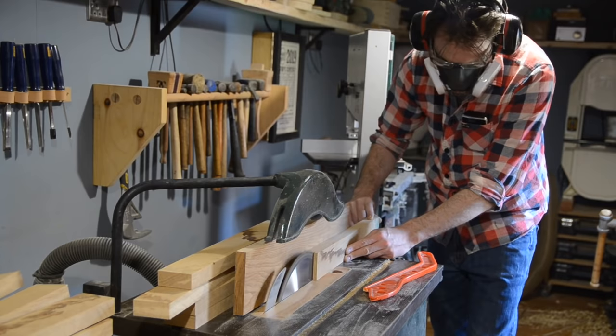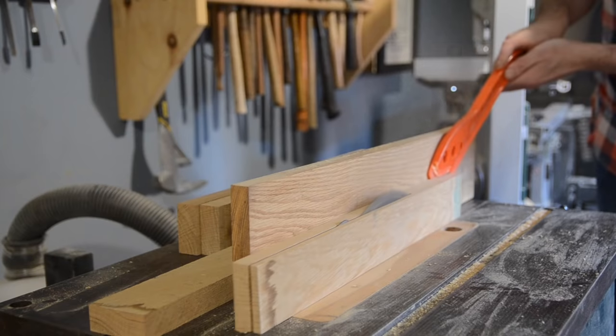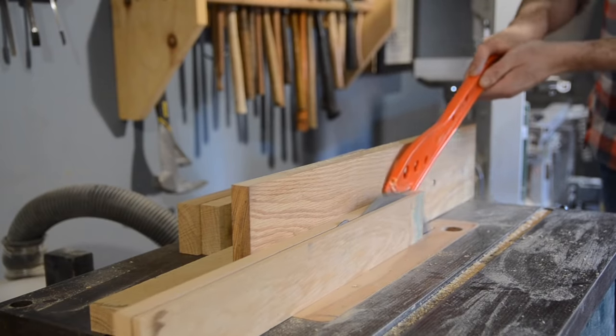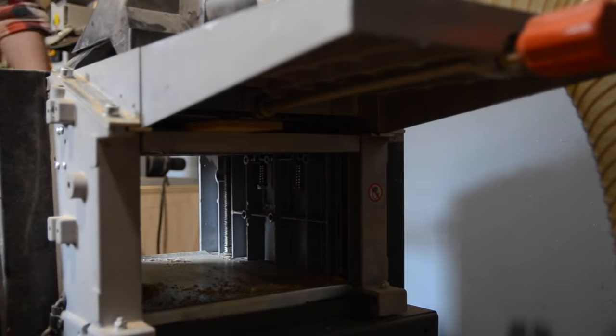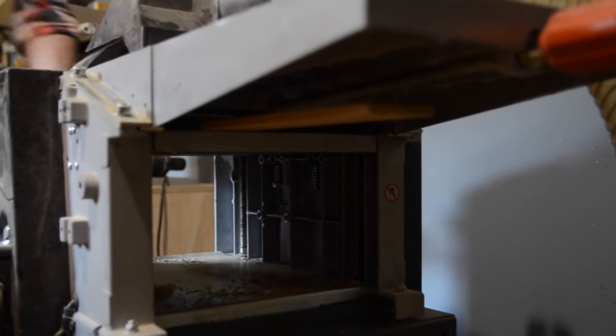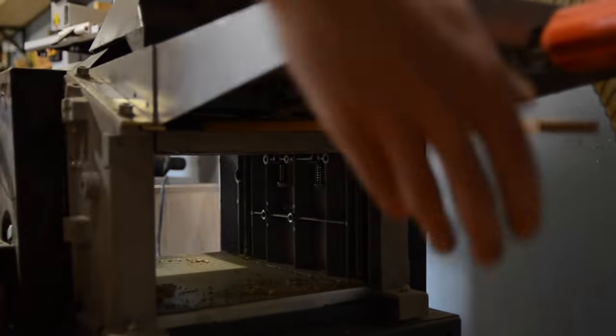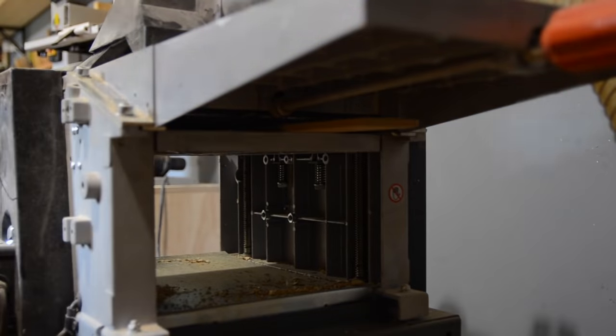These are still very chunky, so instead of thicknessing it down and wasting all that wood, I can re-saw it and then save these slats for something else another time. These slats do have one rough sawn face, so I get them all put through the thicknesser to clean that up.